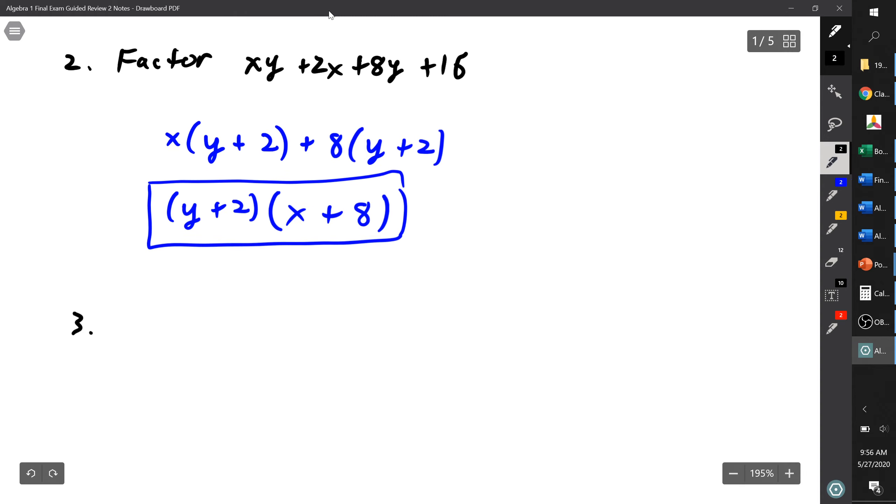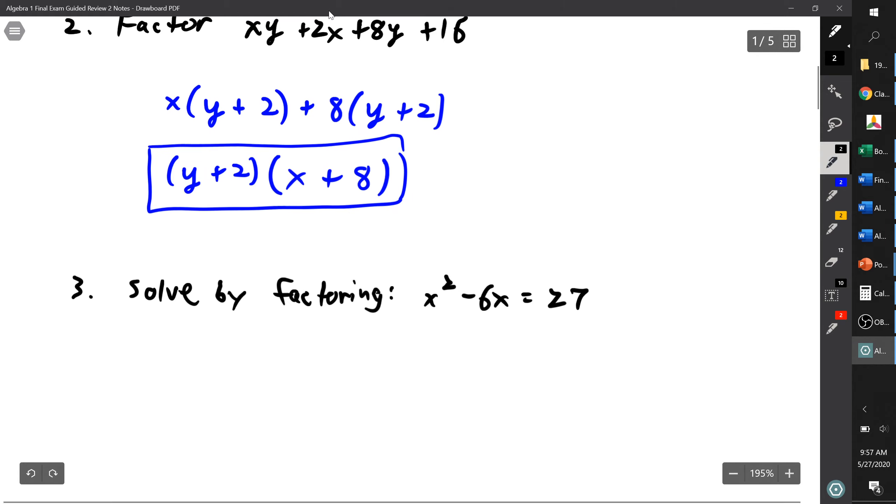And number three. Number three is solve, solve by factoring. Solve by factoring. And what do we have? We have x squared minus 6x equals 27. So again with solving by factoring, we need to get everything on one side and then equals zero. So I need to subtract 27 from both sides. So that will give me x squared minus 6x minus 27 equals zero.